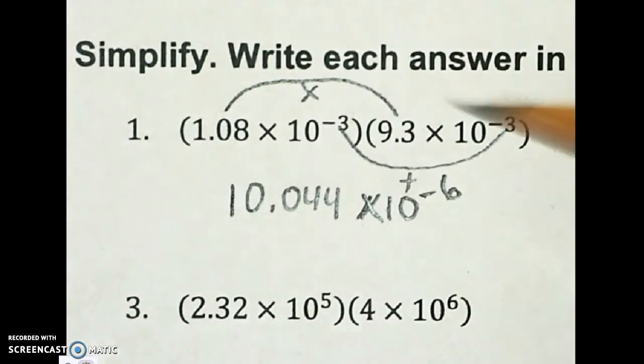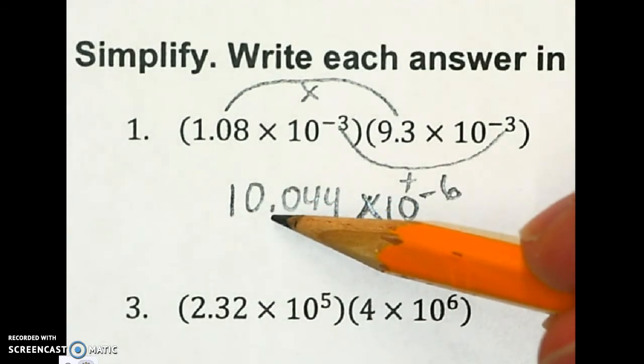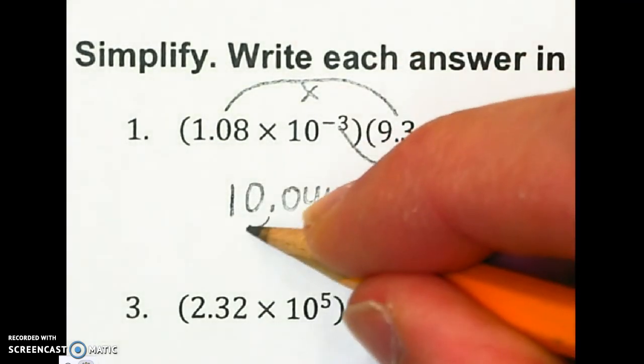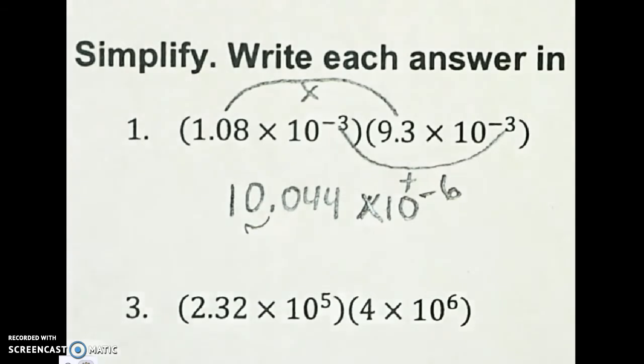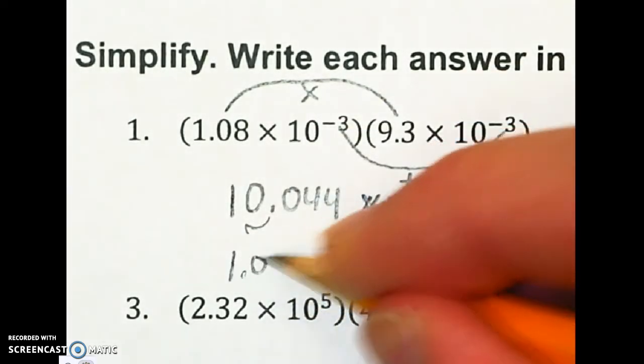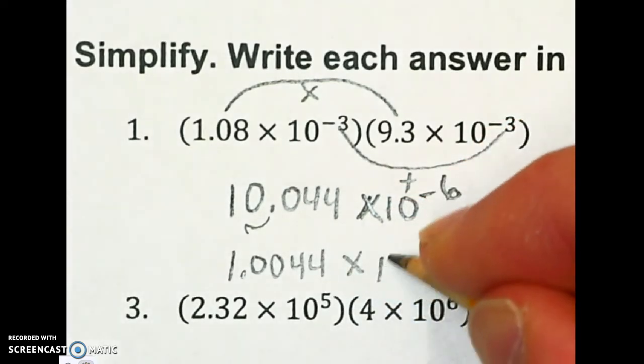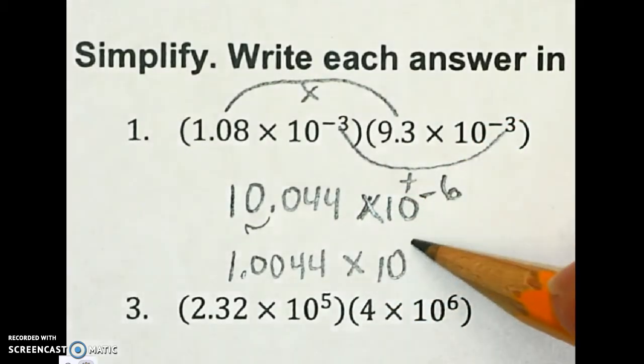But I need to finish with this number in scientific notation. So the decimal is not in the right spot, so I'm going to have to adjust this. I need to move the decimal over a place, and I'm going to rewrite this. So my real answer is 1.0044 times 10.